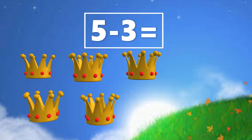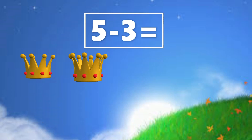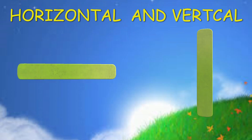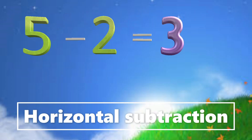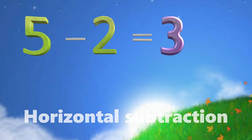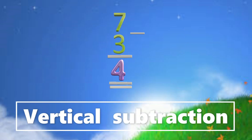Horizontal and vertical. What is the horizontal way? Horizontal subtraction means writing numbers in a sleeping line. Vertical subtraction means writing numbers in a standing line.